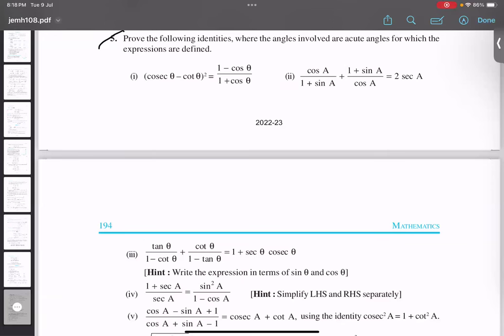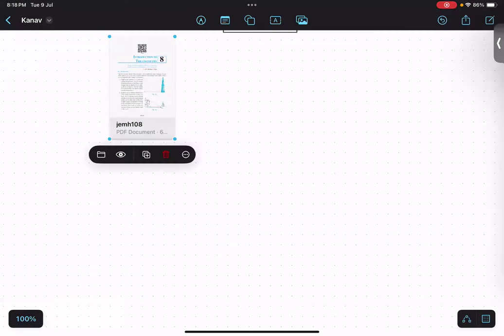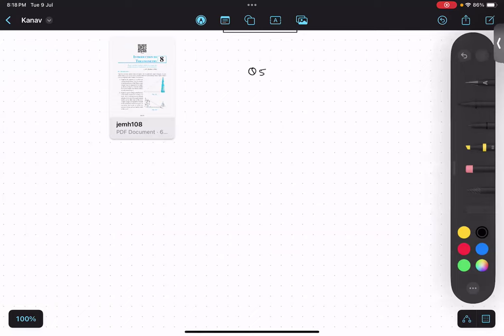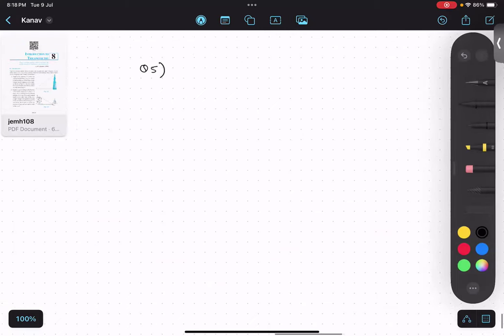Let us start question number 5. Question number 5 talks about the first part I am doing. Cosec θ minus cot θ whole square equals 1 minus cos θ upon 1 plus cos θ.